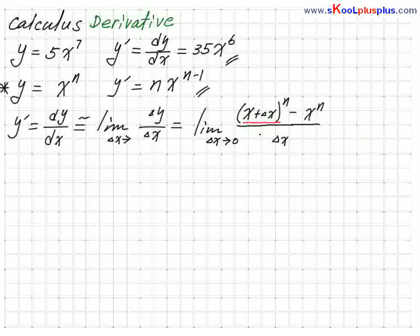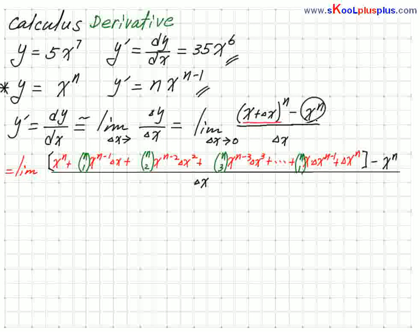Now I'm going to solve this using the binomial theorem. So we take the limit and expand (x + delta x)^n using the binomial theorem. You can see x to the nth power appears there, and the original minus x to the nth power is also there — so x^n minus x^n cancels out and is gone.